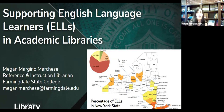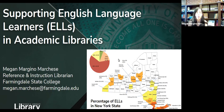Not all of these strategies can be applied to all situations, but keeping them in mind when working with students can be useful. Students will be doing research and using the library throughout their college careers. If you use these methods that benefit ELLs, you can really help all students learn to conduct research and help in their transition to college.